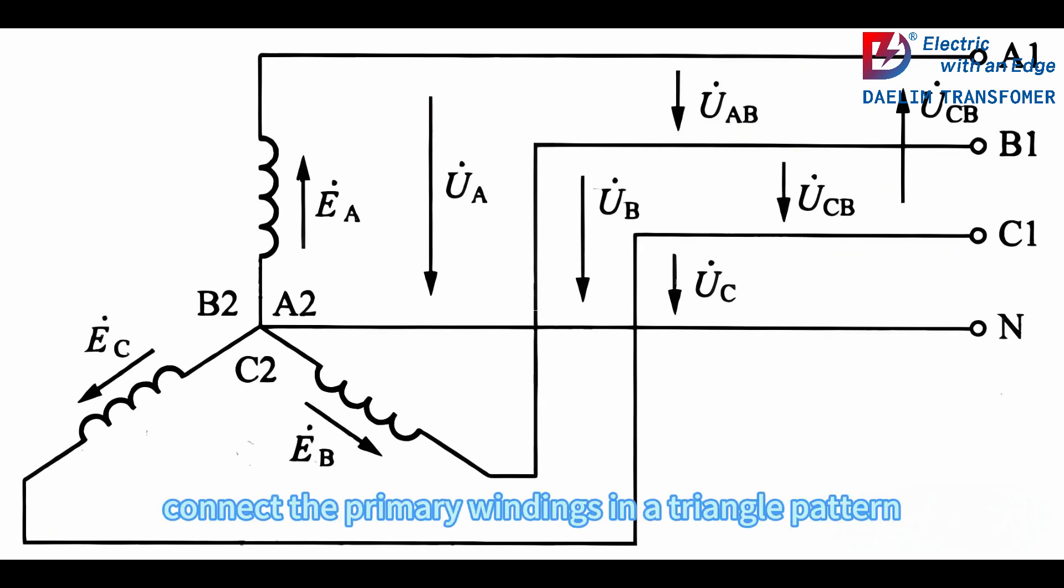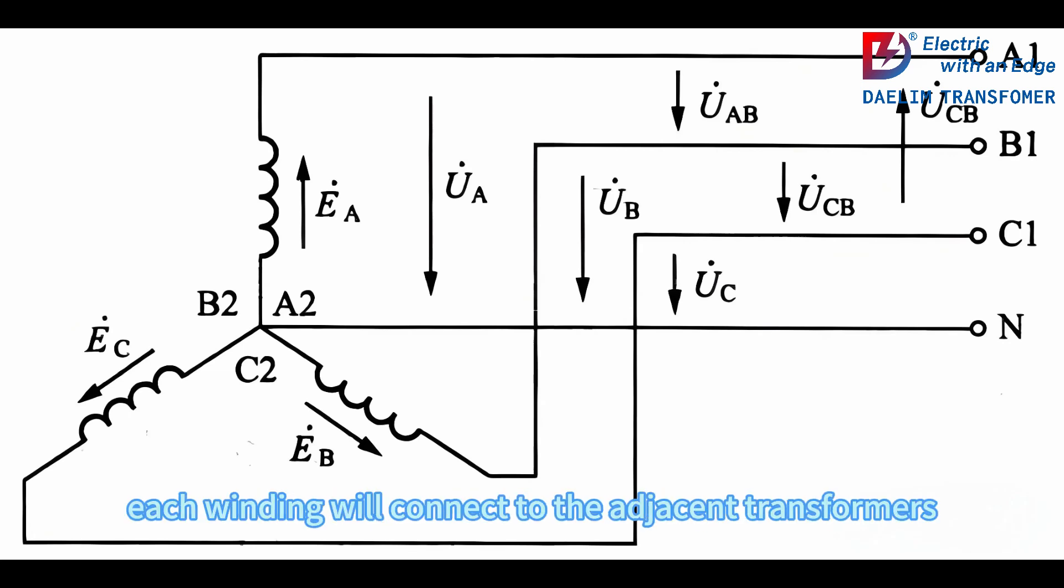For a delta connection, connect the primary windings in a triangle pattern and do the same for the secondary windings. Each winding will connect to the adjacent transformer's terminal.